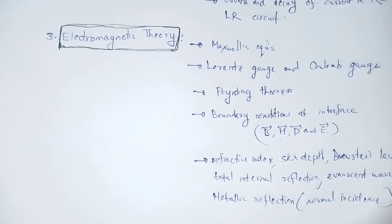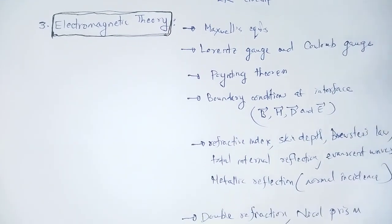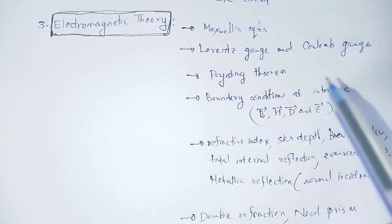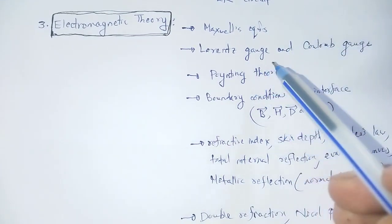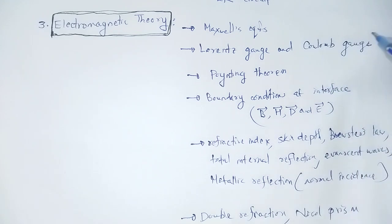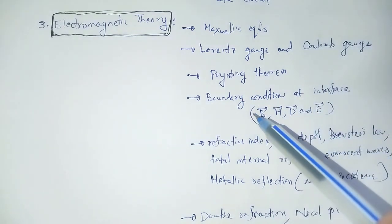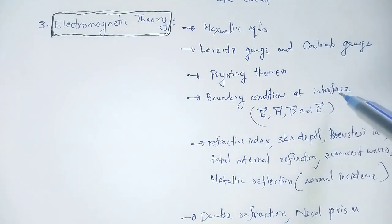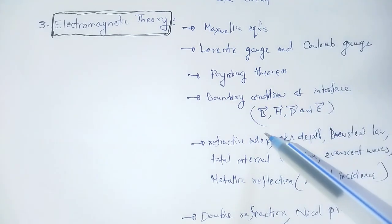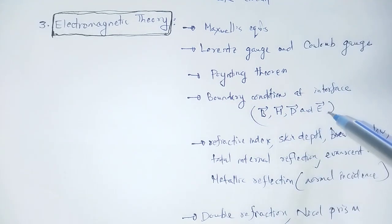Electromagnetic theory important topics summary: Maxwell's equations, Lorentz gauge and Coulomb gauge, Poynting theorem, boundary conditions at interface — B vector, H vector, D vector, and E vector.